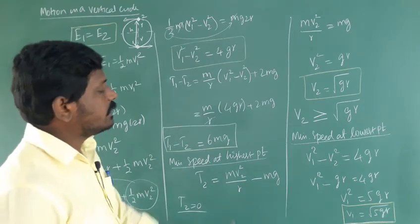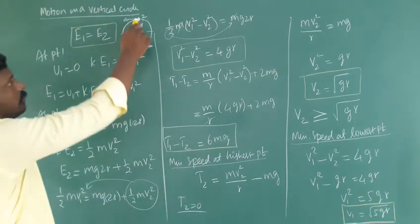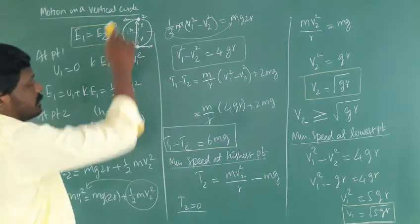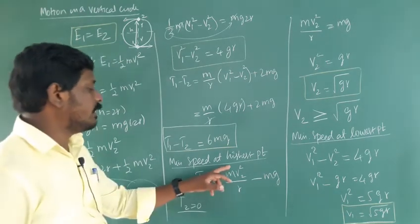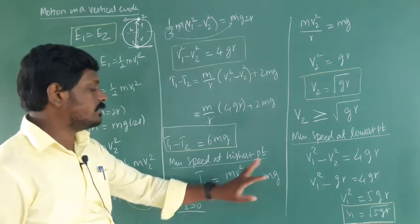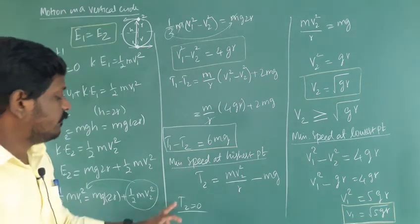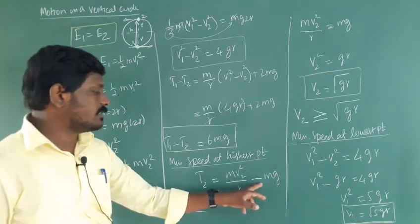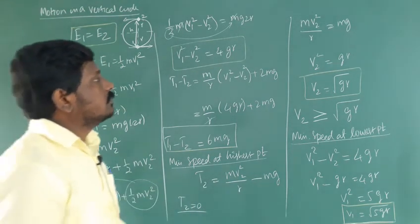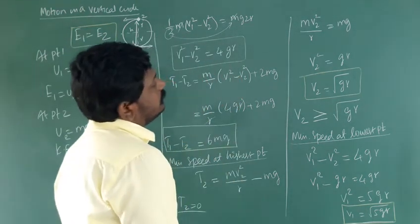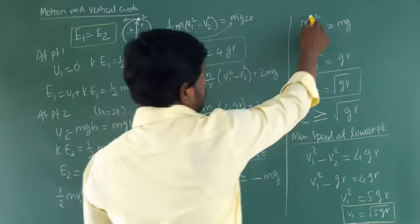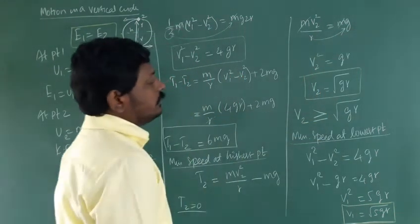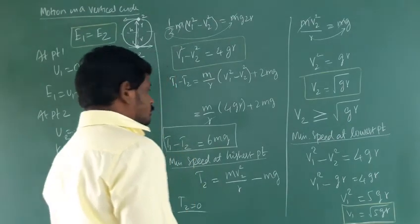Now for the minimum speed at the highest point: at the highest point the tension in the string is T2 equals M V2 squared over R minus M G. For the minimum condition, the tension T2 is considered to be 0, so M G moves to the right-hand side giving M V2 squared over R equals M G. The masses cancel so V2 squared equals gr, and therefore V2 equals square root of gr.